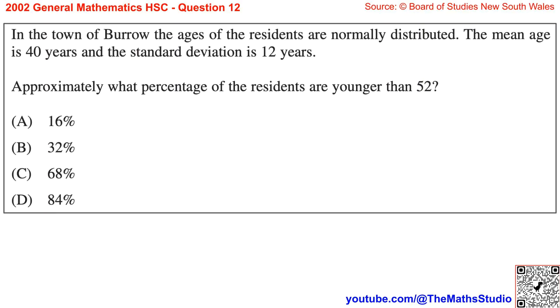Question 12. In the town of Burrow, the ages of the residents are normally distributed. The mean age is 40 years and the standard deviation is 12 years. Approximately what percentage of the residents are younger than 52?